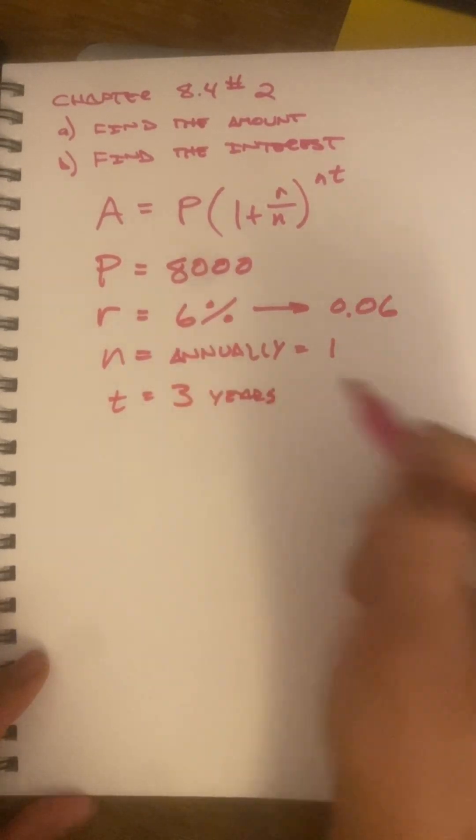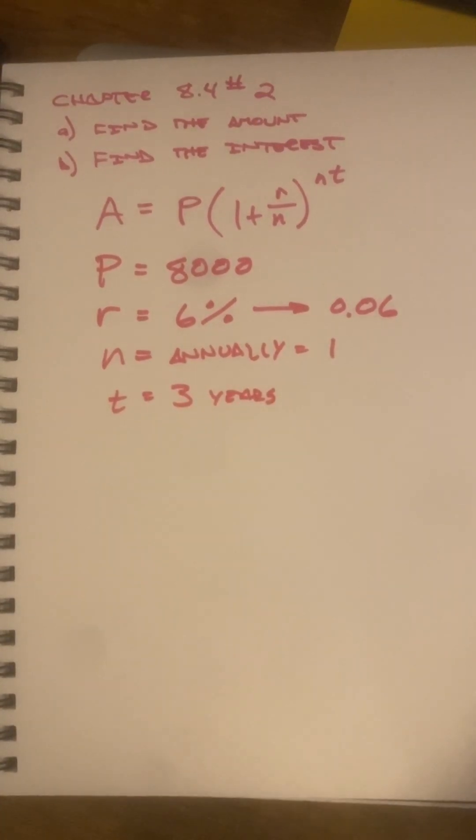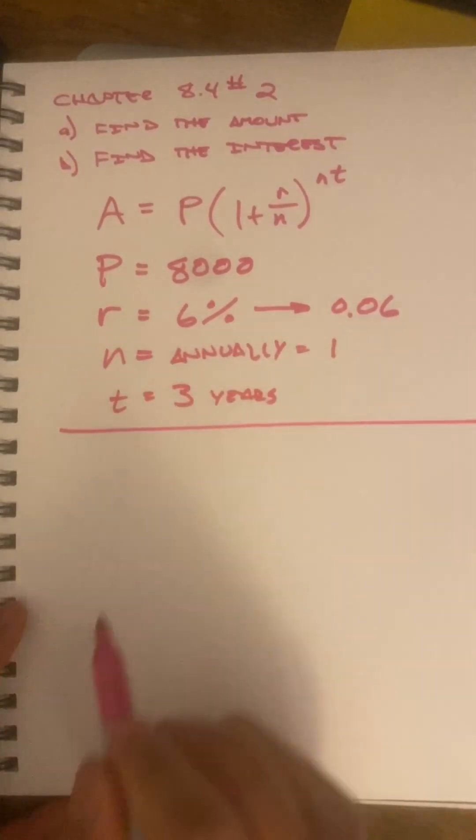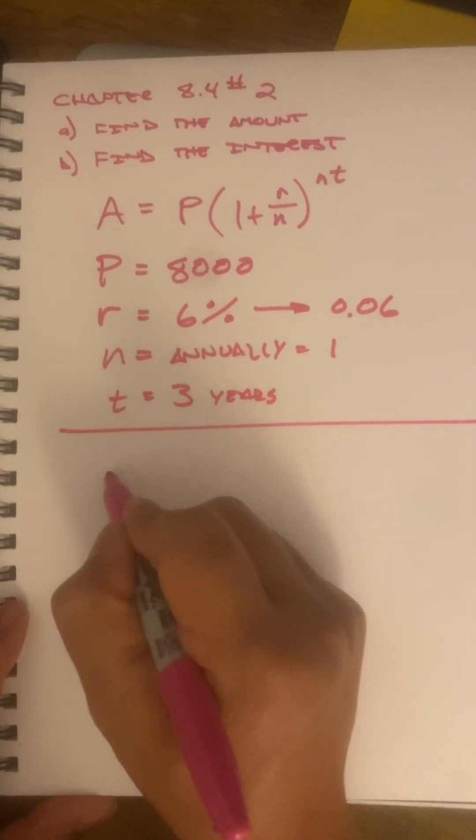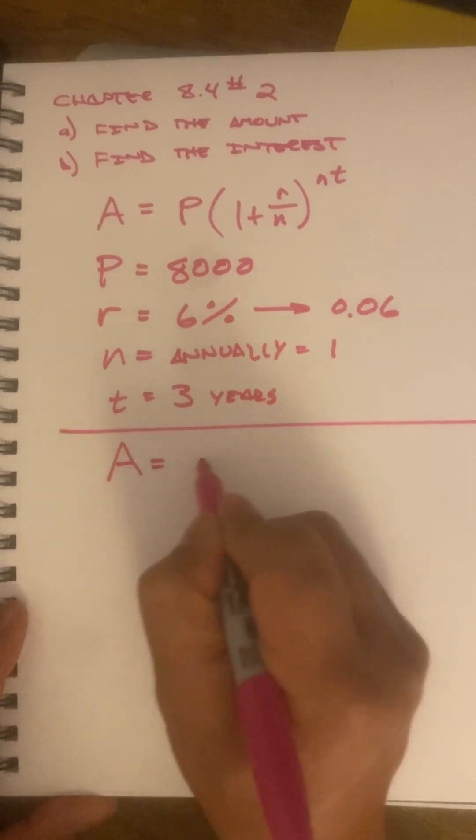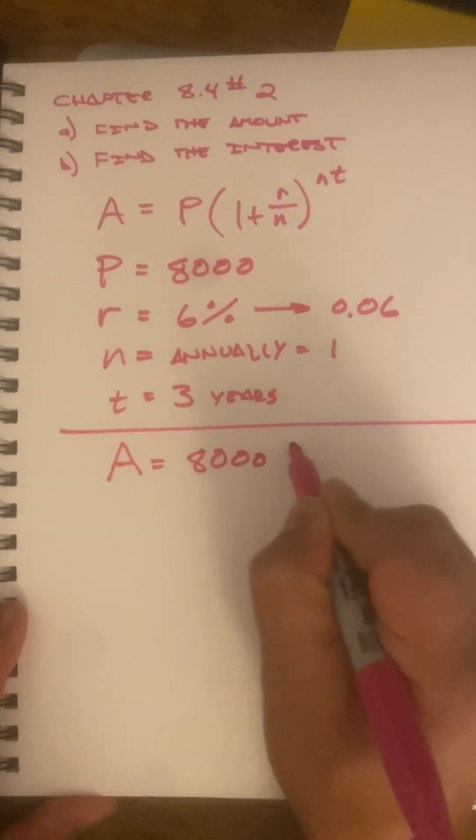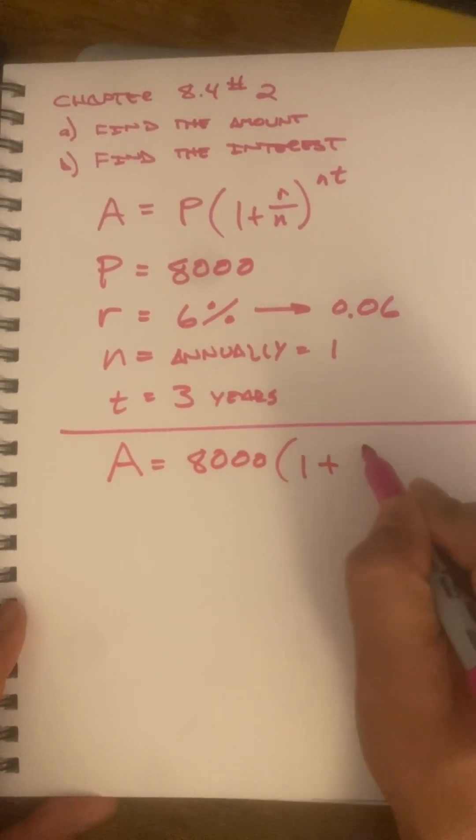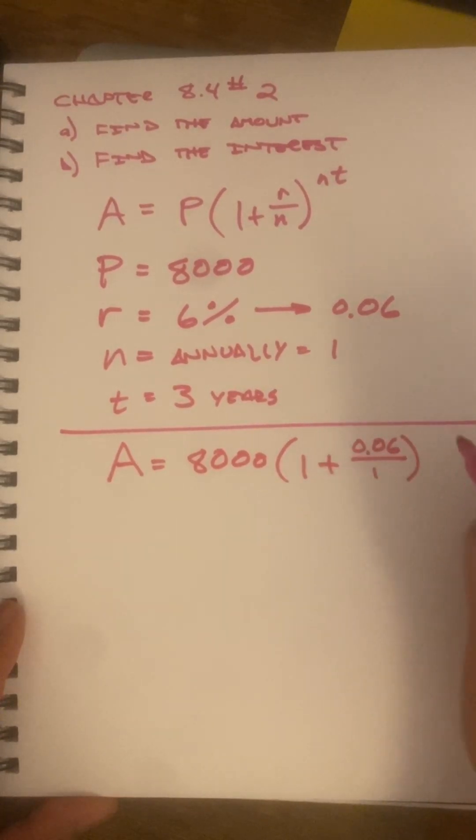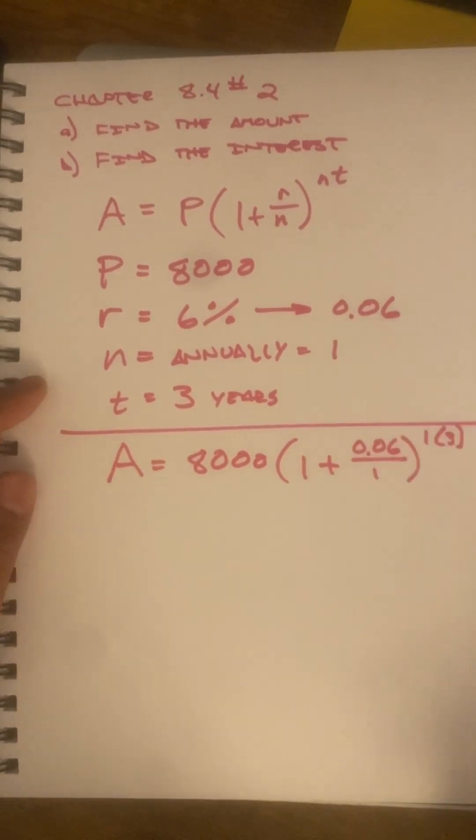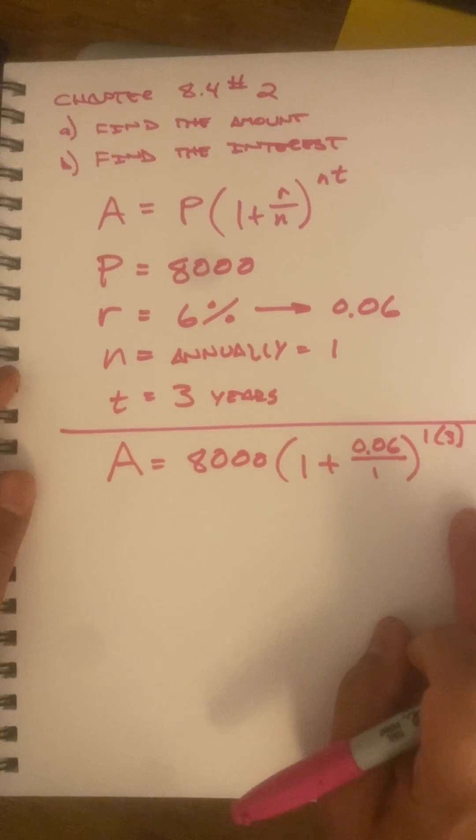And we're going to do this over 3 years. That's all the information that we need. We're just going to plug it all into our formula. A equals 8,000, 1 plus 0.06 over 1 to the power nt. So, that's 1 times 3. I hope you can see all that clearly.